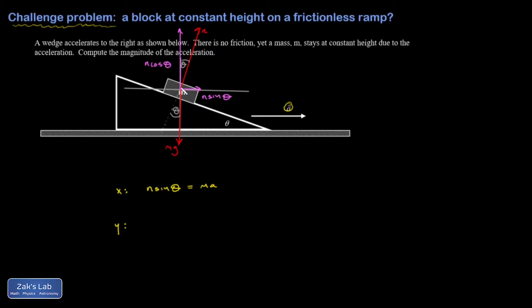The y analysis is that, well, my forces are balanced here. This mass is not moving up or down at all. It's going in a straight line to the right, because it's staying at constant height. So n cosine theta pointing up better be equal to mg pointing down.